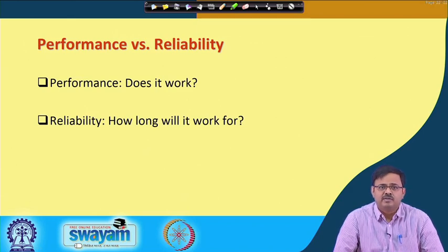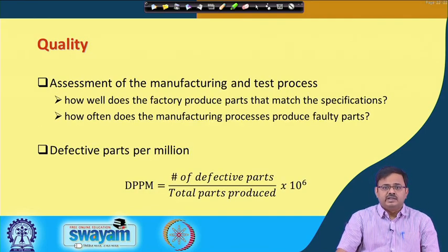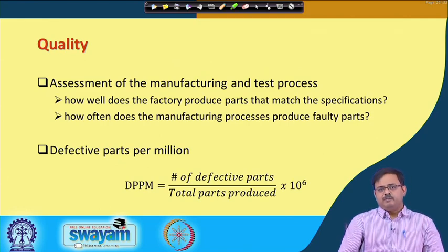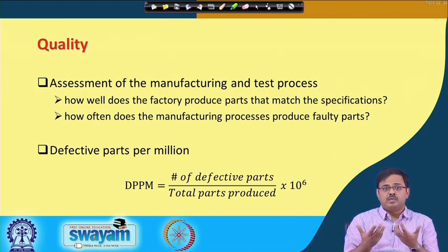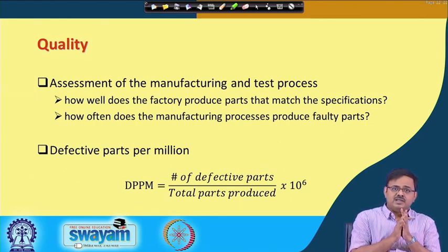Performance versus reliability: performance is whether the product works according to specifications. Reliability is how long it will work. Quality is the assessment of the manufacturing and test processes — how well the factory produces parts to match specifications and how often manufacturing processes produce faulty parts.